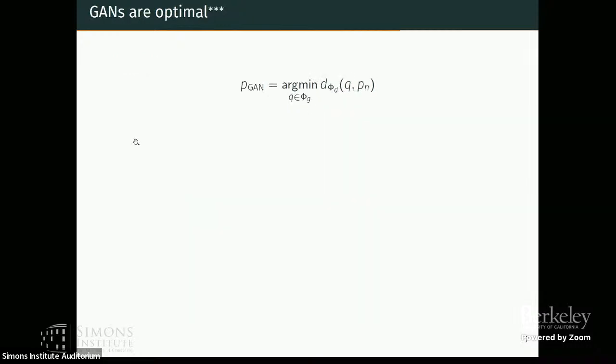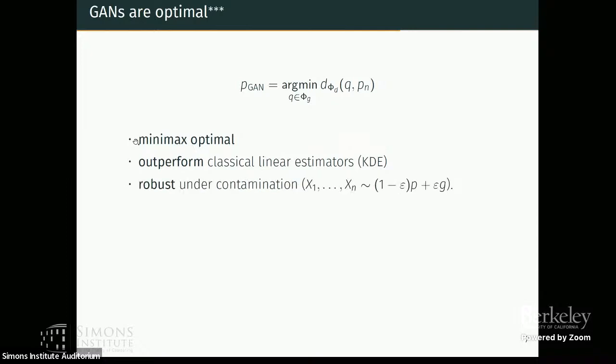And so we were able to show that such a GAN estimate is minimax rate optimal, and it outperforms classical linear estimators such as the kernel density estimate.